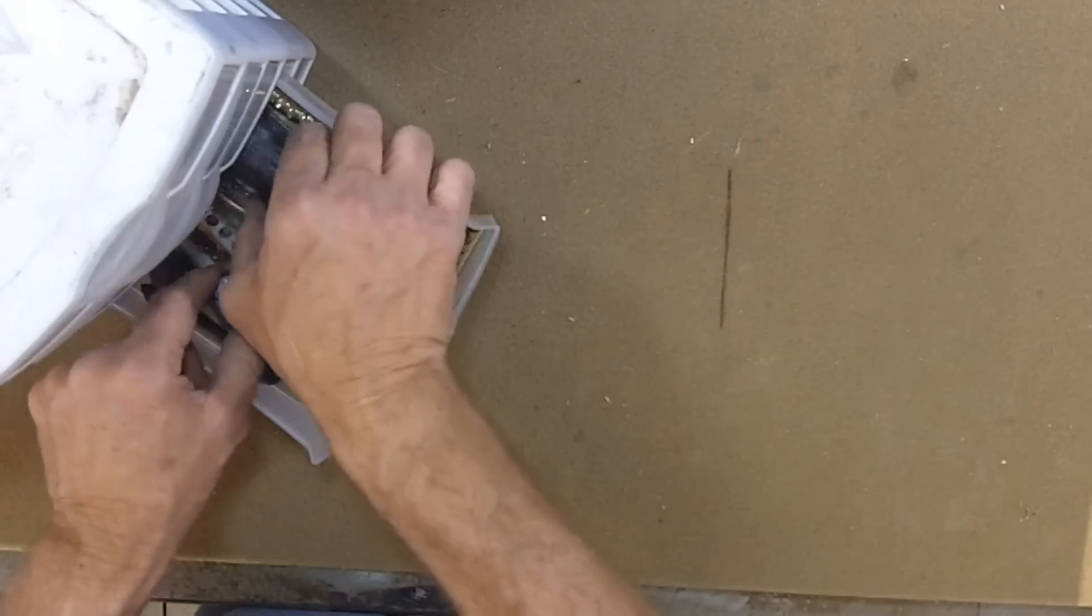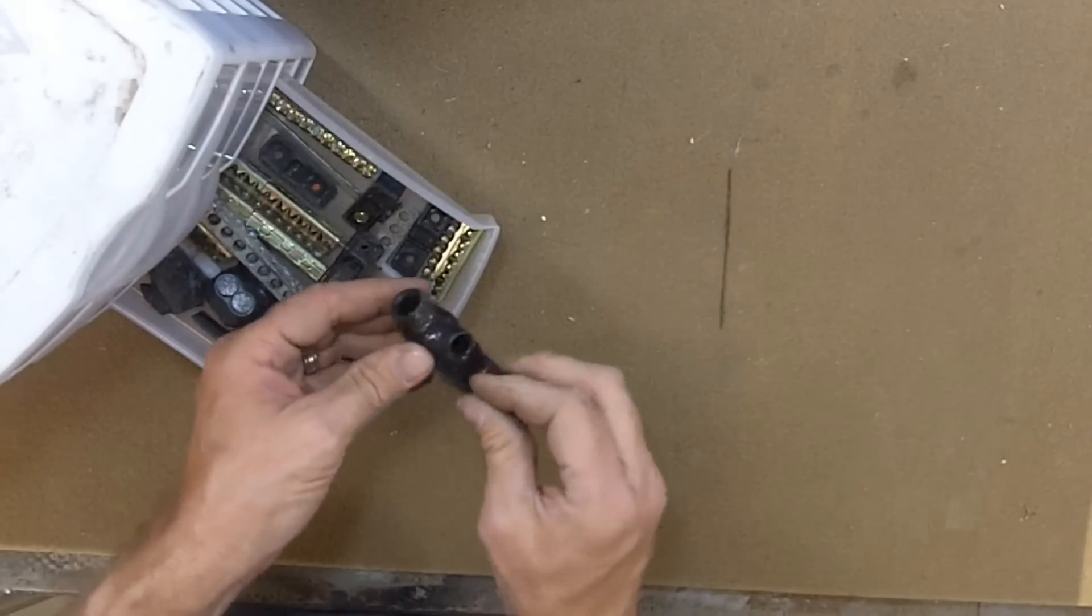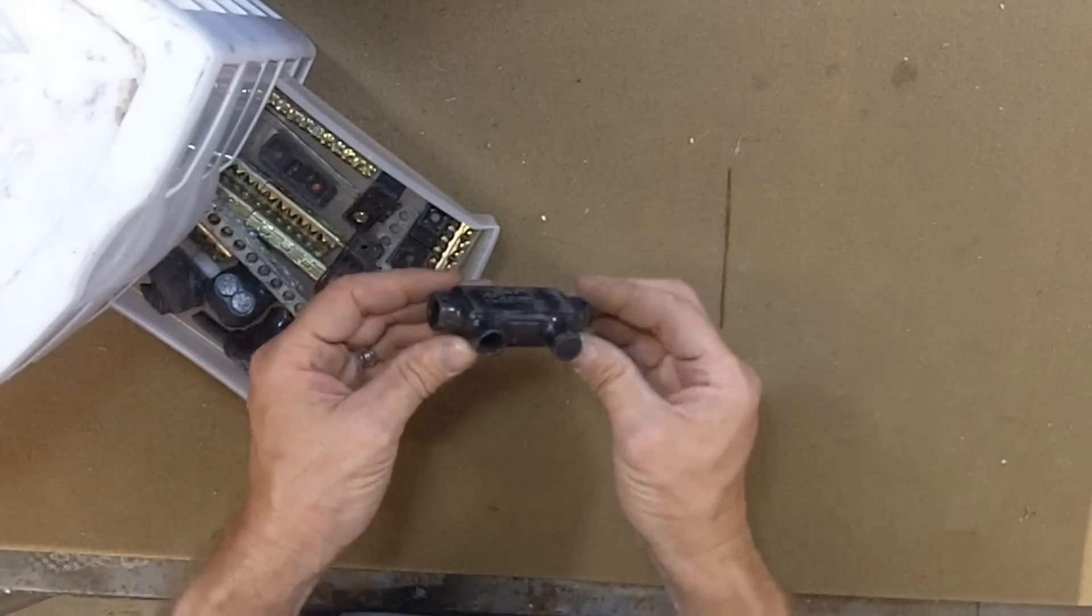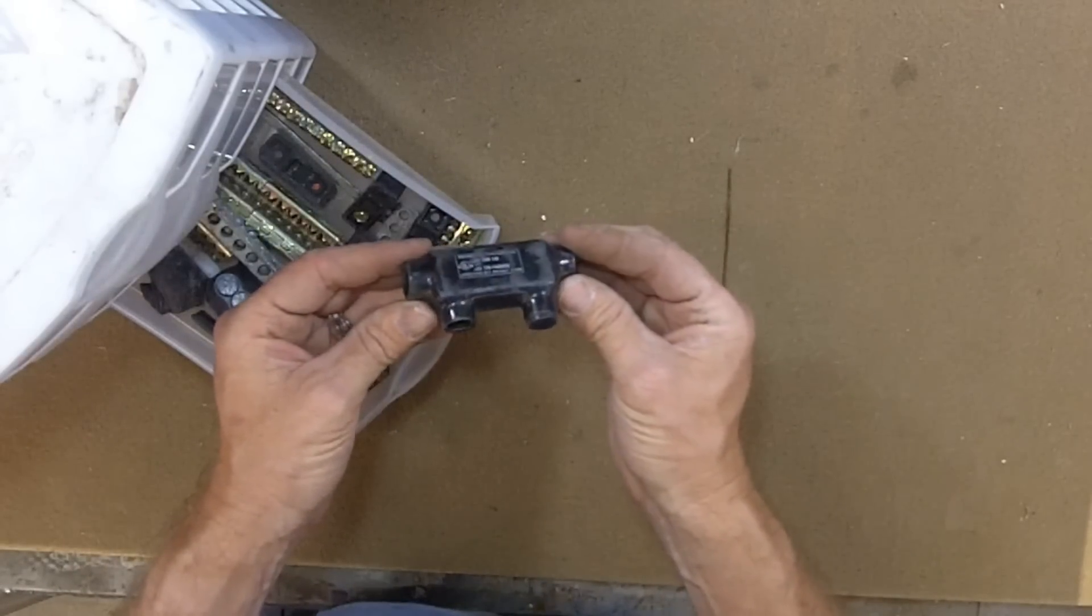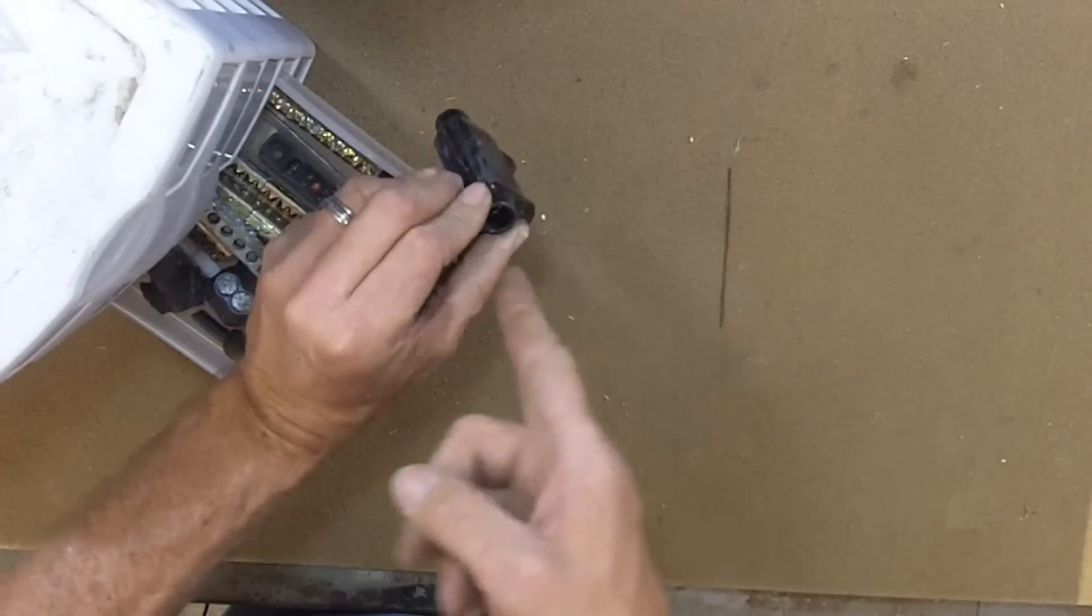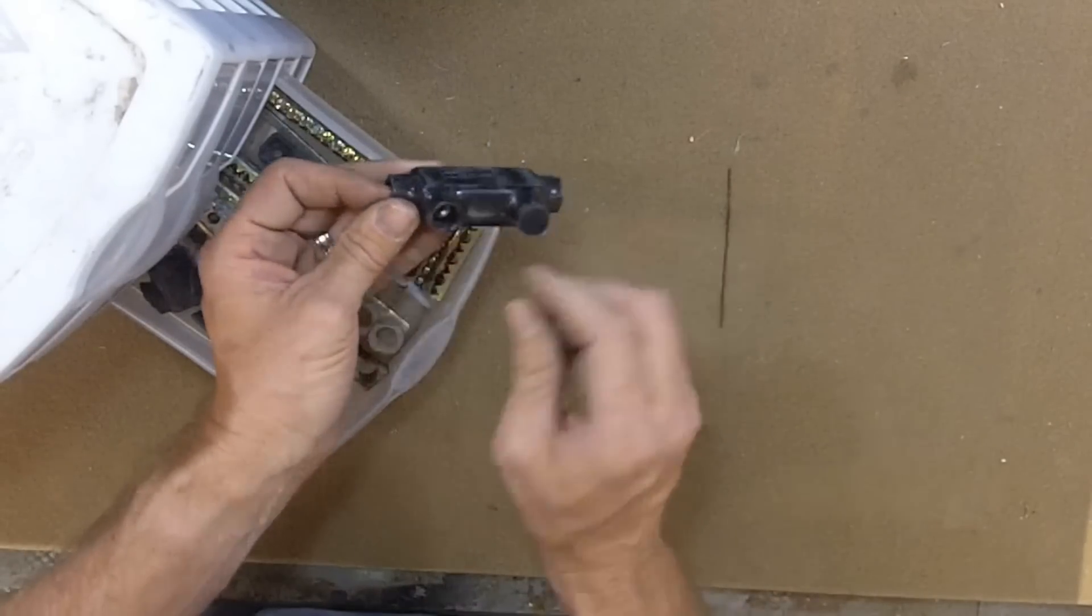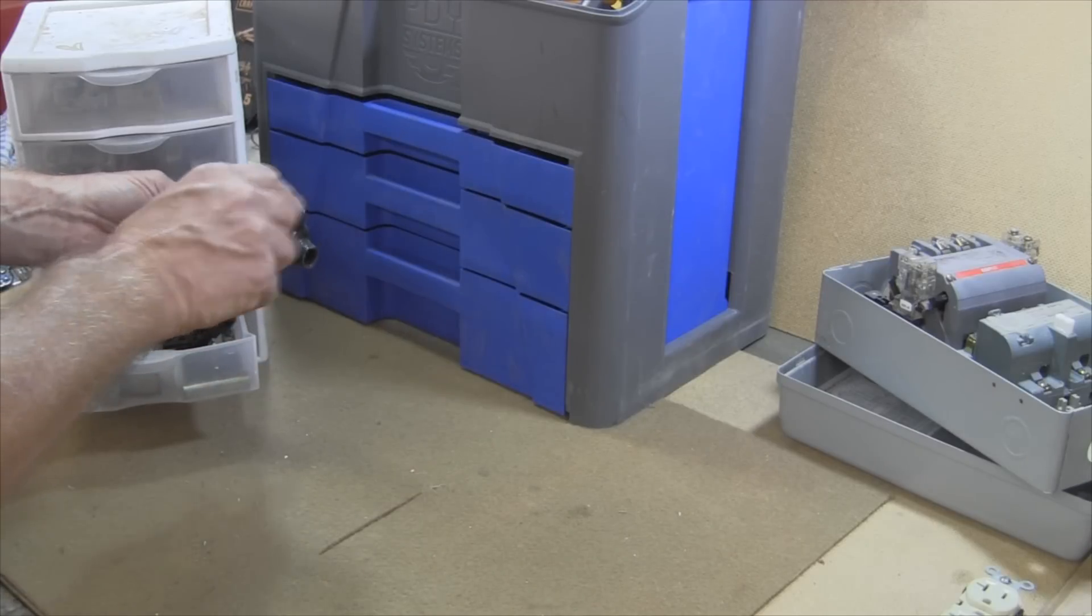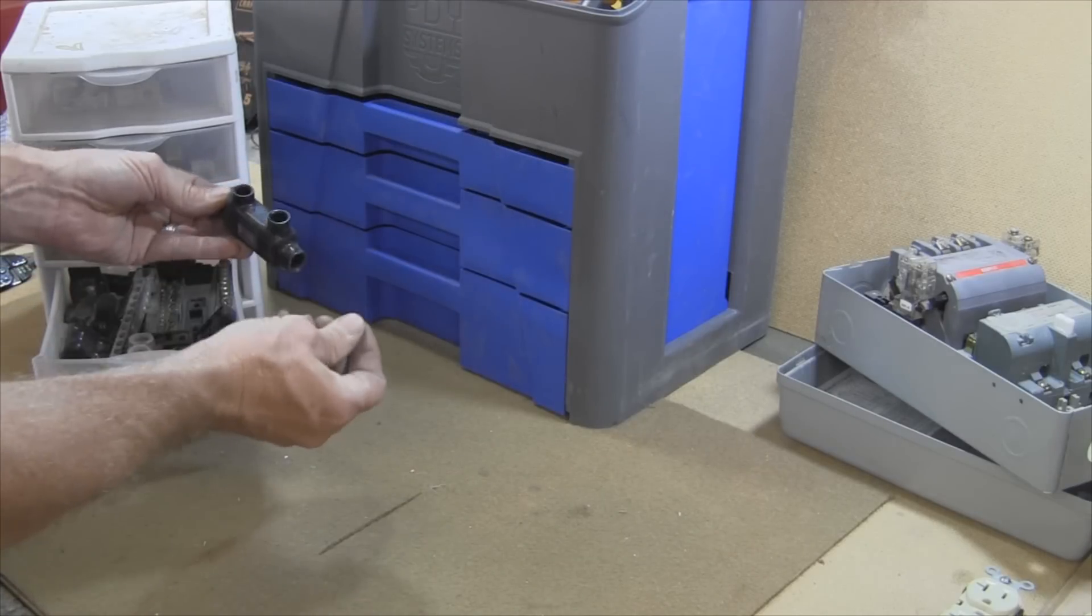Going to this next one, in lieu of a butt splice, most of the time this is what I've been using. It's got a lug in there and you stick your wire in both ends and then you can tighten it down with a set of allen wrenches and then seal it all back up.